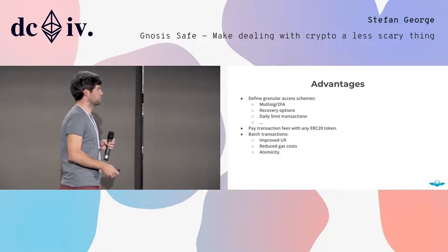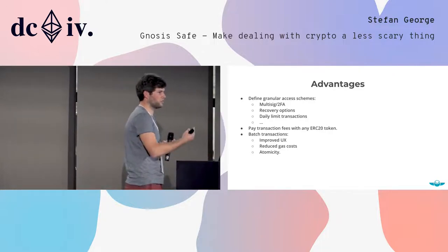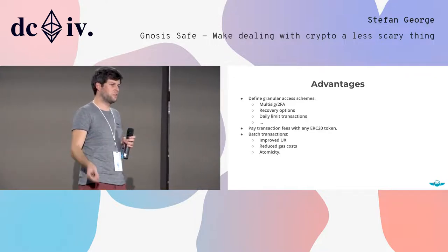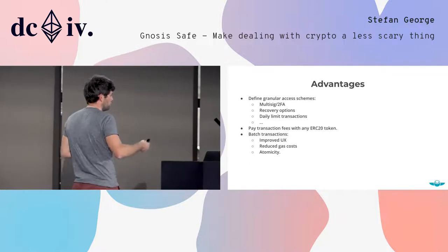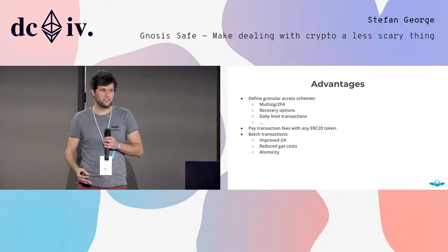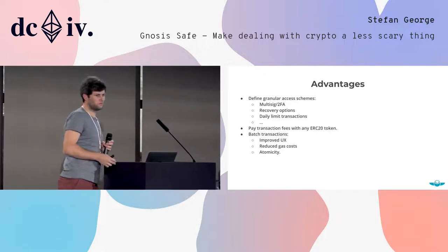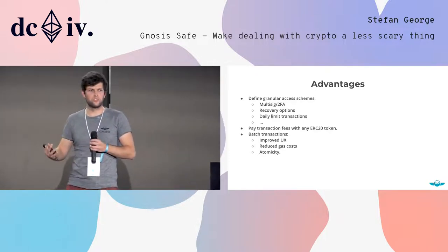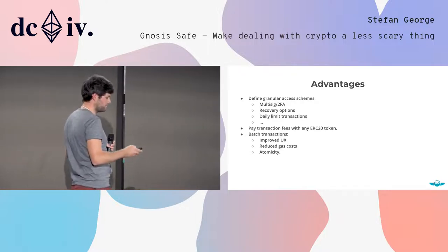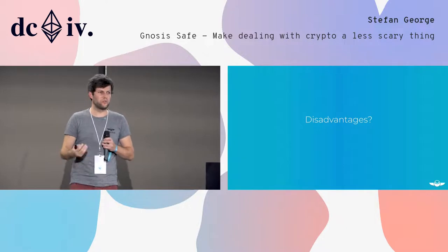To sum up, the advantages: we are able to create fine-grained access schemes. What is currently implemented is just a regular multi-sig, and two-factor authentication is what we essentially use for our own clients. You can integrate all kinds of new access schemes like recovery options or daily limit transactions. You can pay transaction fees not only in Ether but in any ERC20 token. And you can also improve UX on your own dApps by using batch transactions. There are probably many more advantages when you think about all the different modules you may want to build.